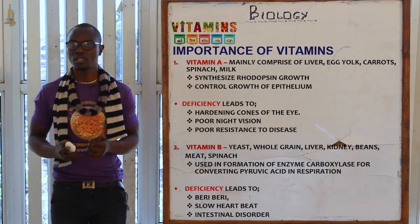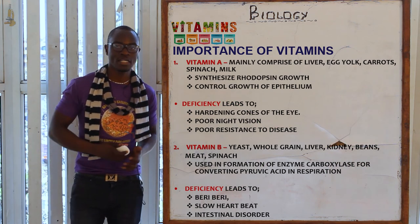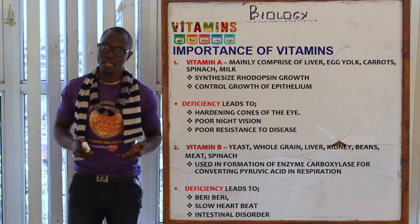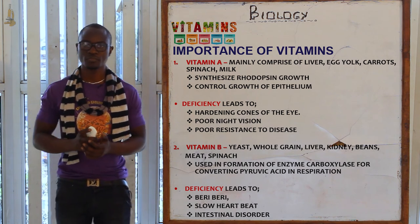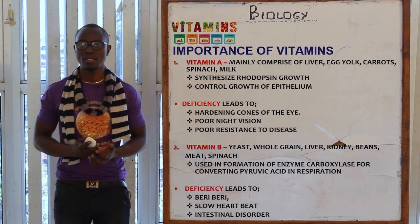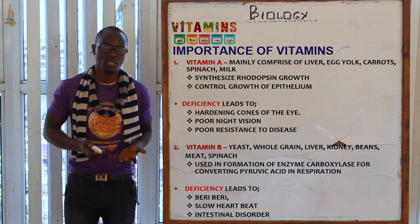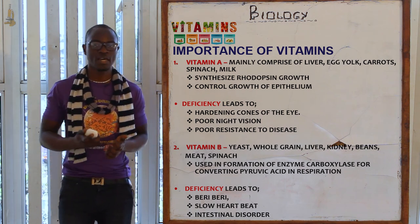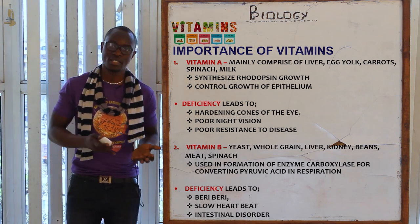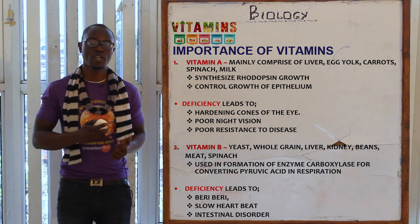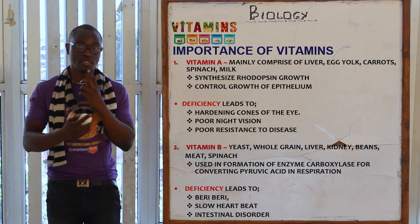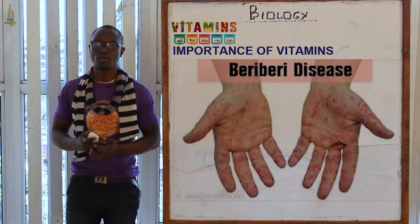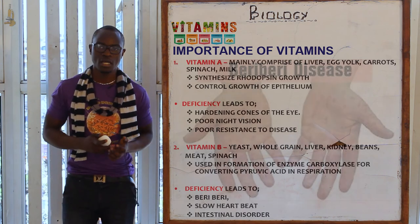Vitamin A deficiency also causes poor night vision and poor resistance to various diseases. Vitamin B is found in yeast, whole grain, liver, and kidney, and is mainly used in the formation of the enzyme carboxylase for converting pyruvic acid in respiration, such as in the Krebs cycle. Deficiency of vitamin B leads to beriberi, slow heartbeat, and intestinal disorder.